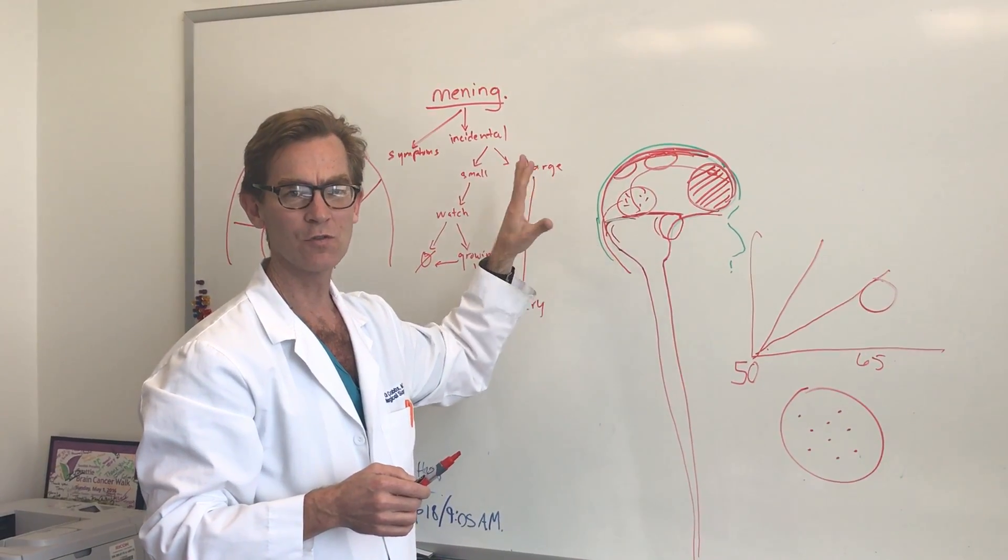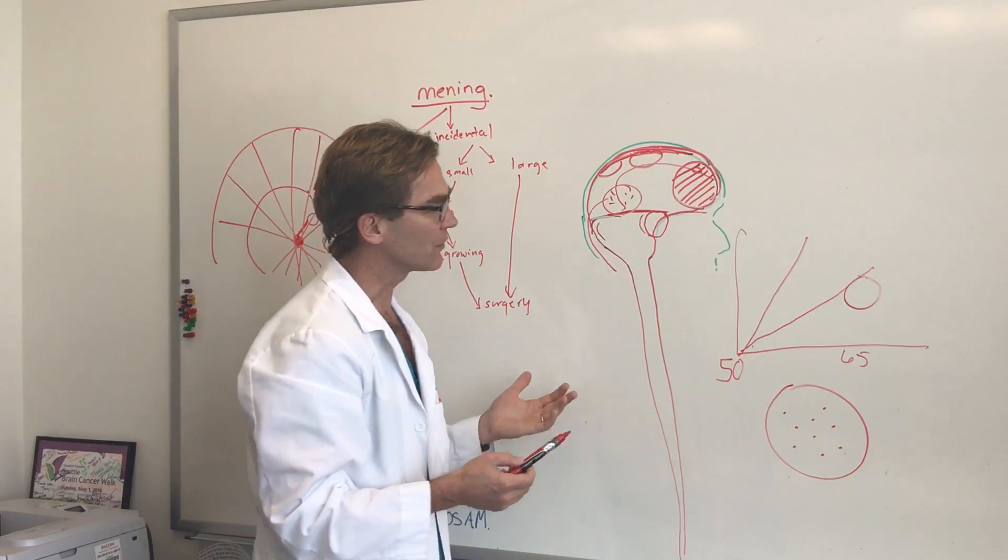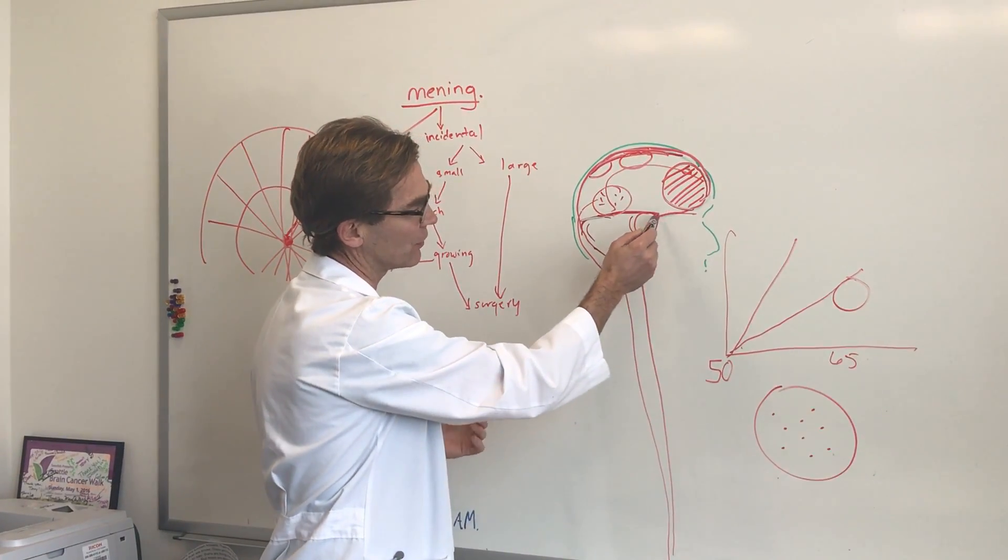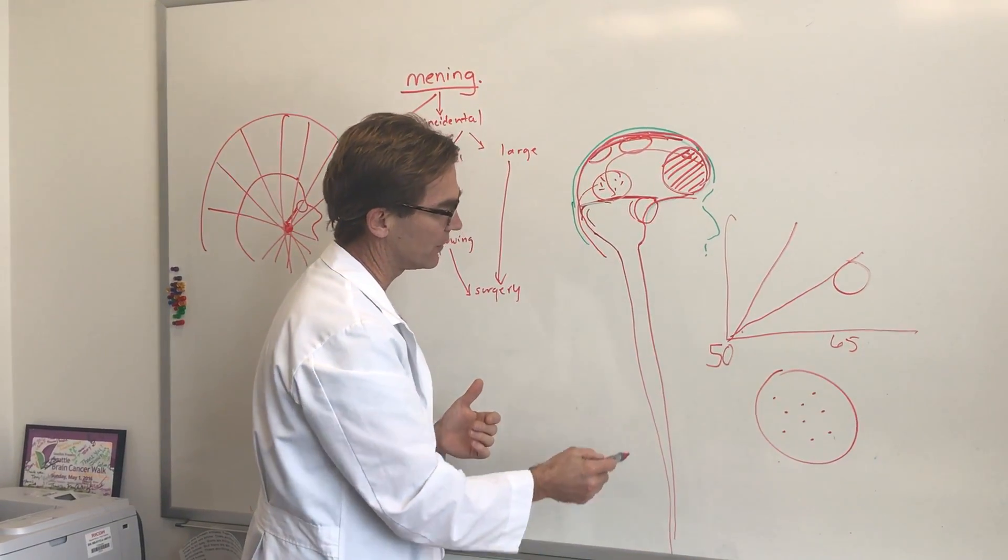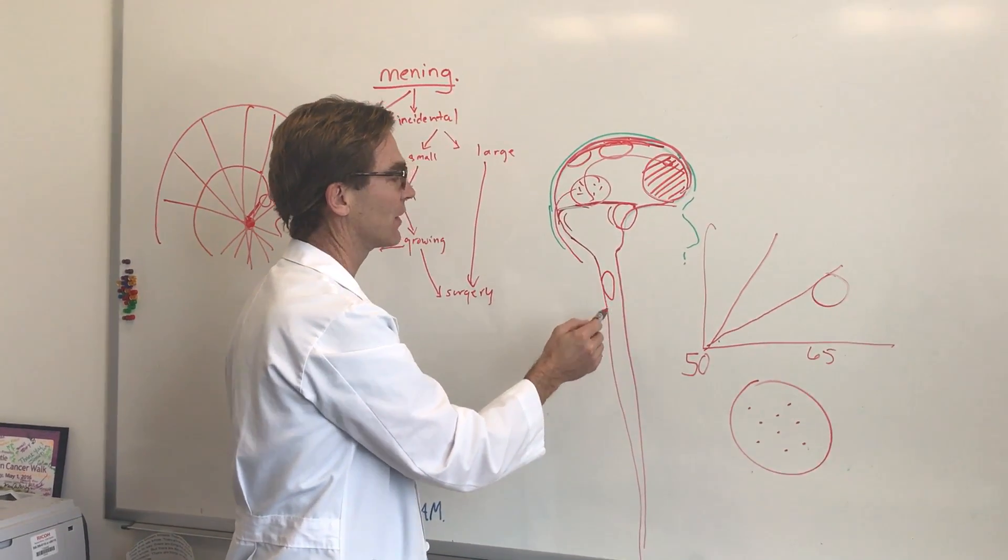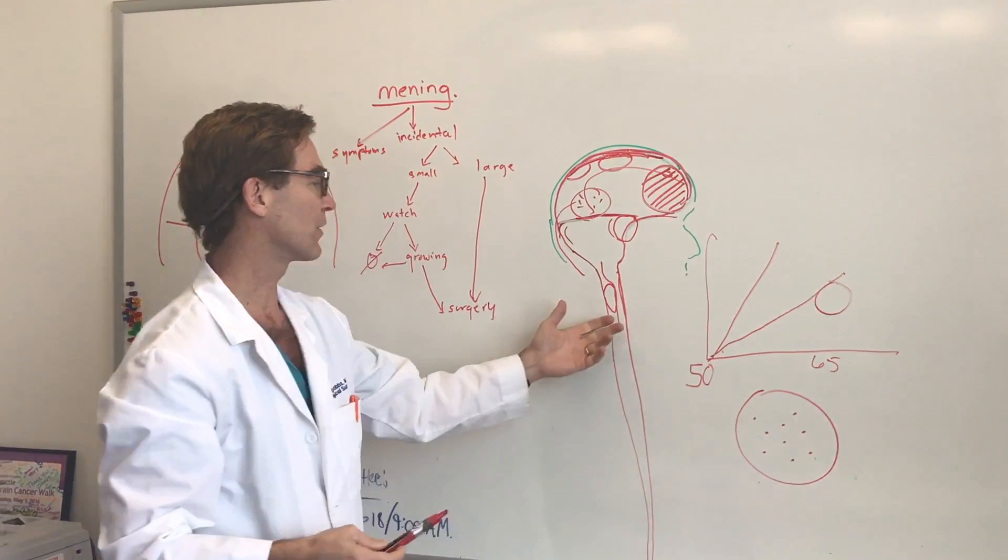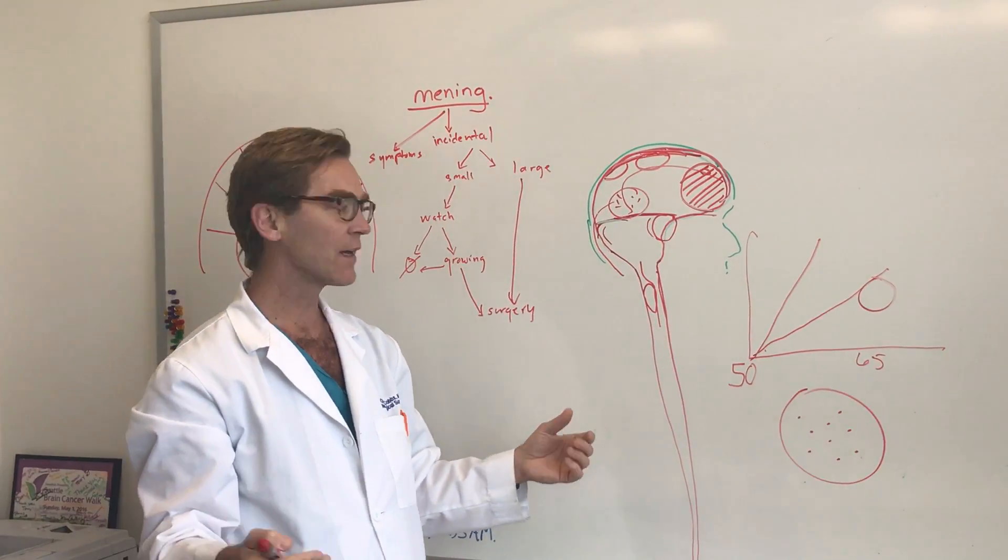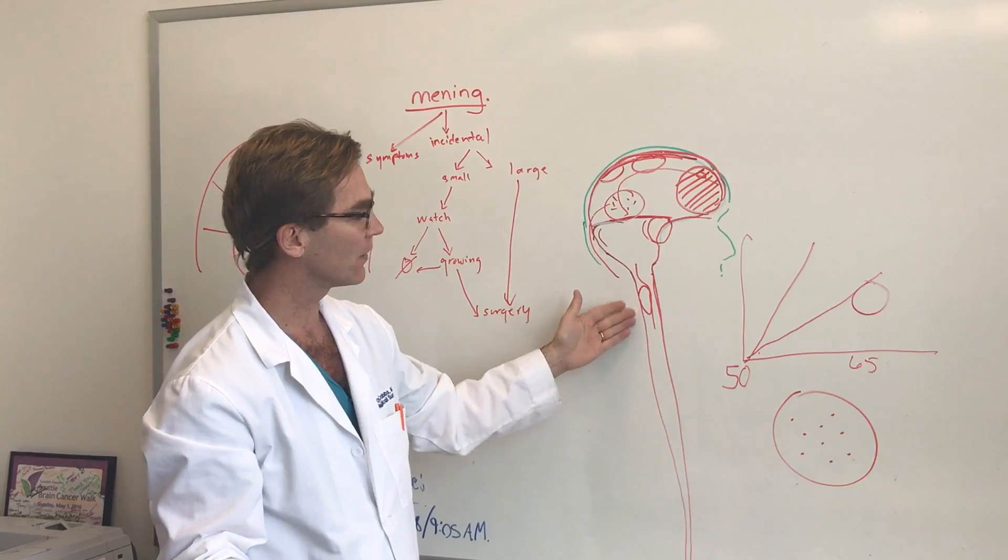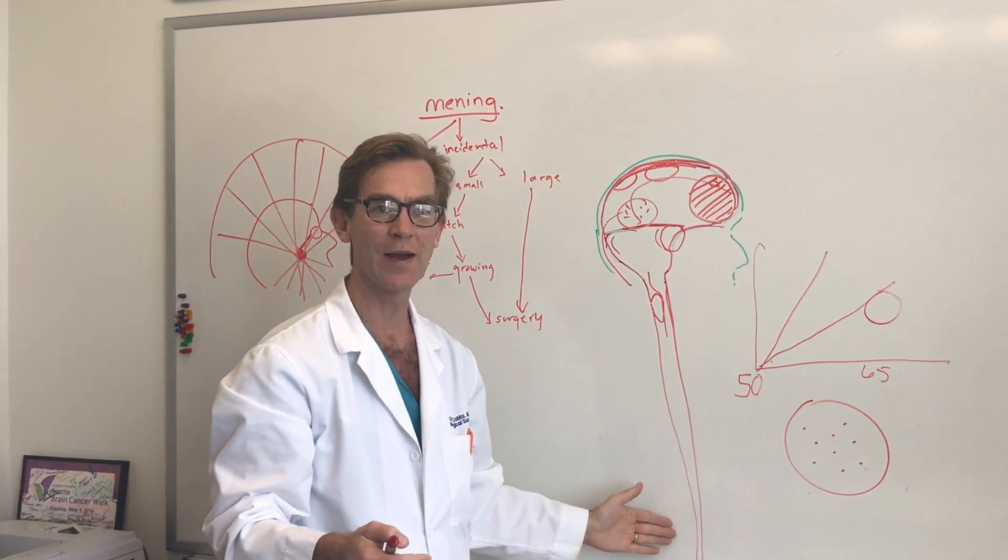For these tumors, even if you get a complete resection, you're going to want to treat that area with radiation to prevent it from coming back. Finally I'll just say that meningiomas can occur anywhere there is dura. Often we'll get slow growing tumors that arise in the spinal canal and cause compression of the spinal cord. People will present with weakness in their arms and legs, and so we'll go in and take these out anywhere from up at the top of the neck down to the low back.